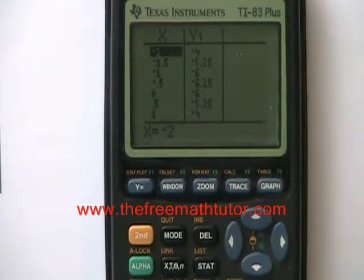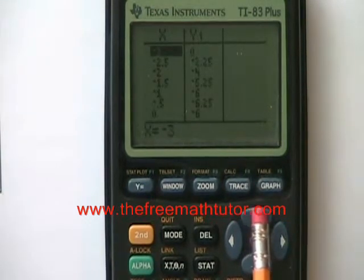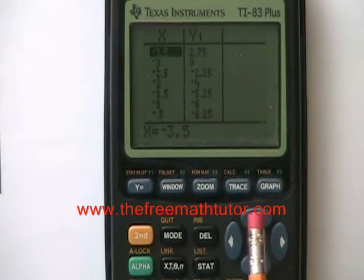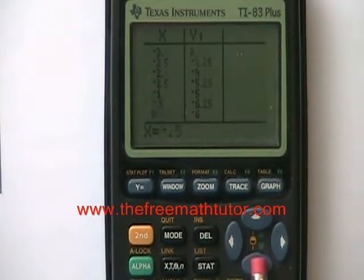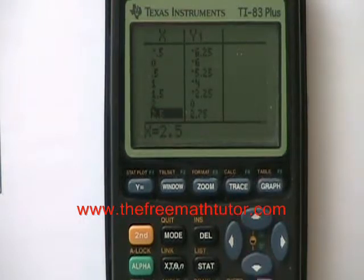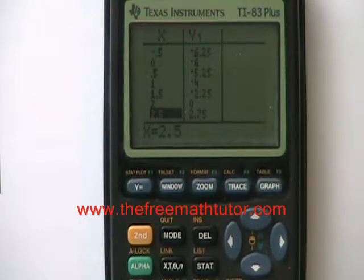So now, to see the zeros, I'm going to start by scrolling up, and soon I get to (-3, 0). If I scroll down, I get to (2, 0). We have found all of our key points.